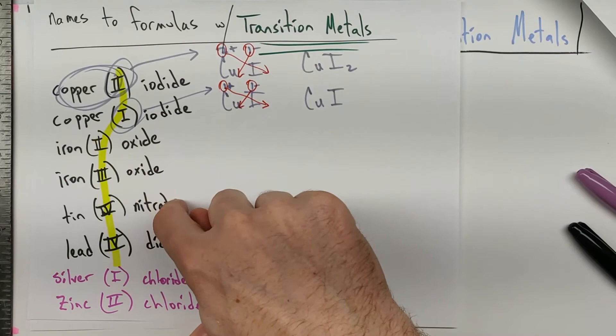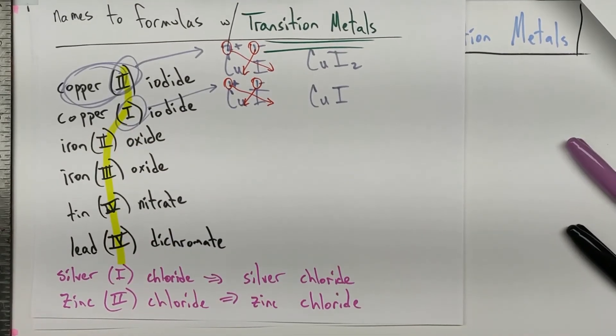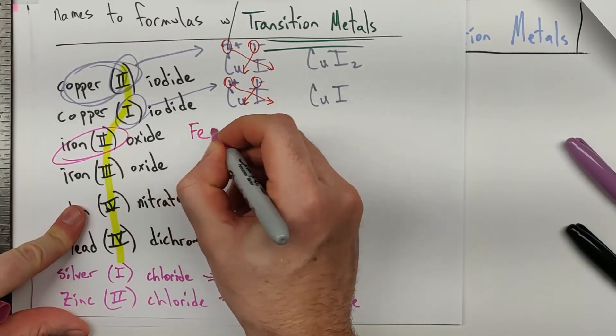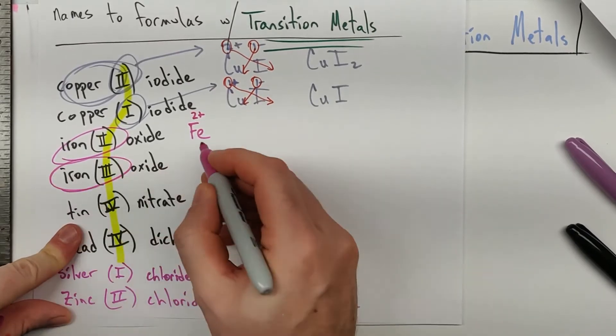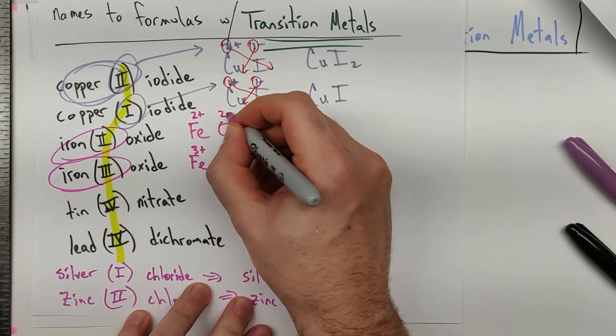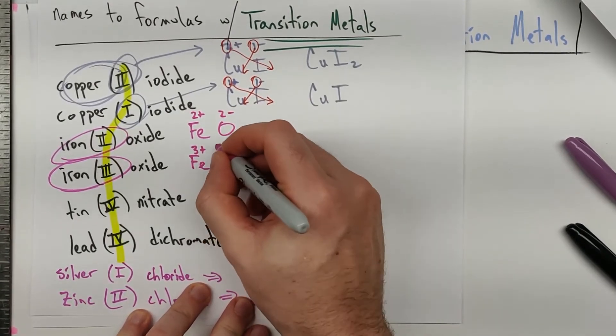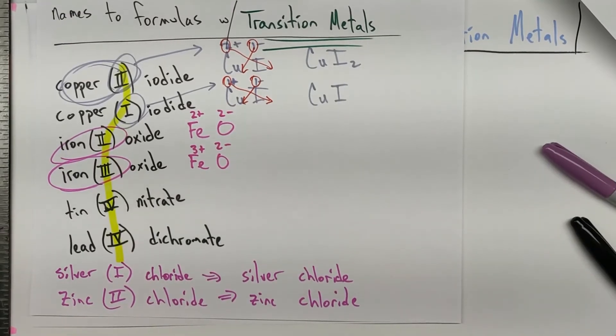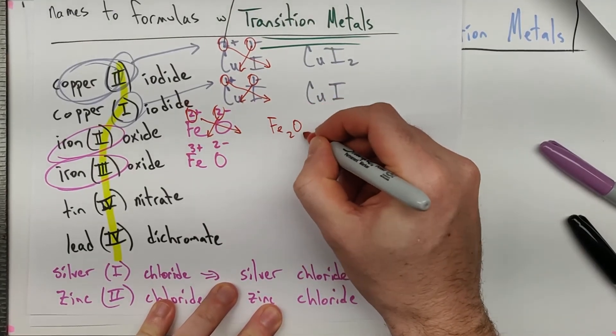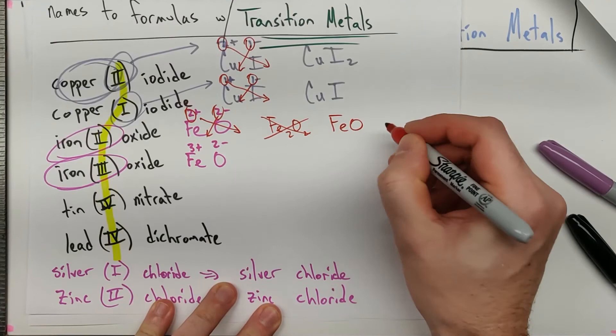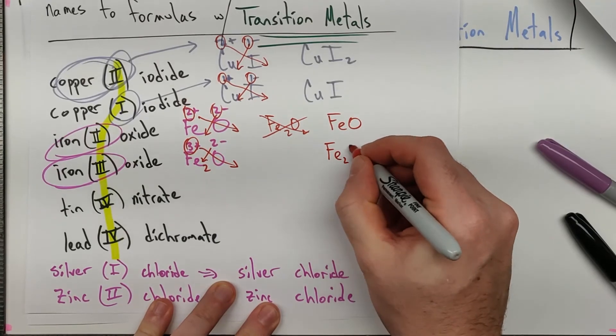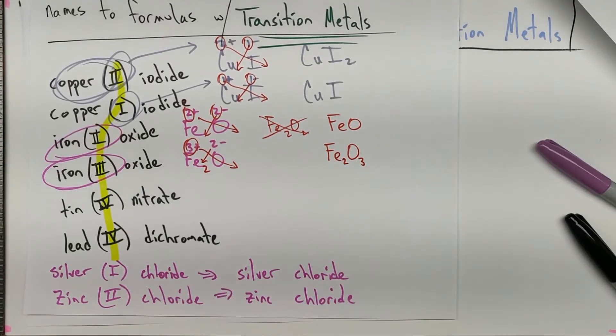I did another example here with iron. So iron, and again, this right here is saying iron, Fe, with a 2+. This is saying Fe, with a 3+. And then we have our oxygen. Oxygen's a 2-. When we crisscross and reduce, 2's going down there, 2's going down there, we're going to get Fe2O2, but don't forget to reduce, FeO. And over here, we're going to have our 2 and our 3, and we do get to keep that one, Fe2O3.